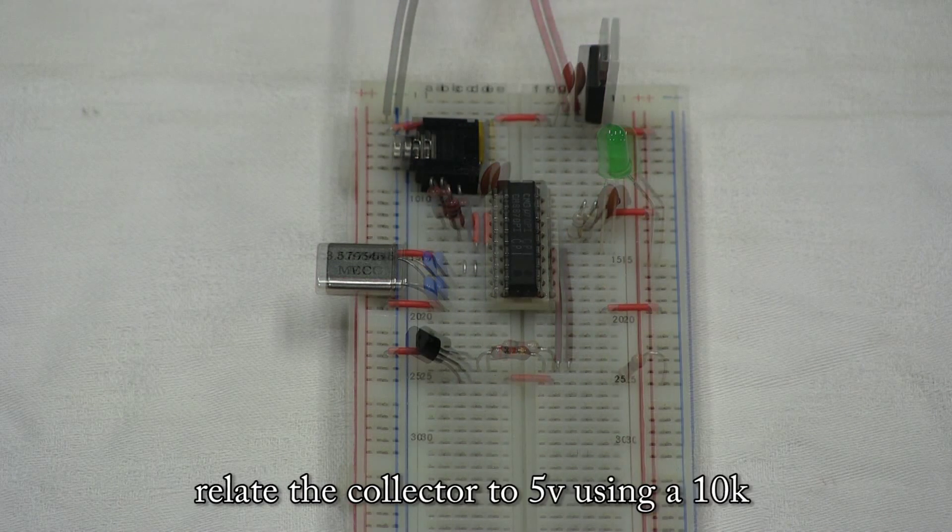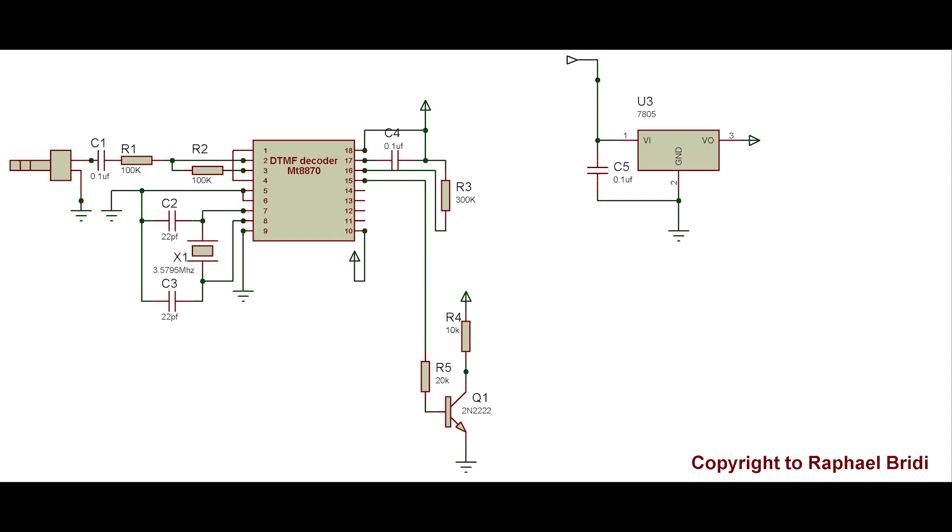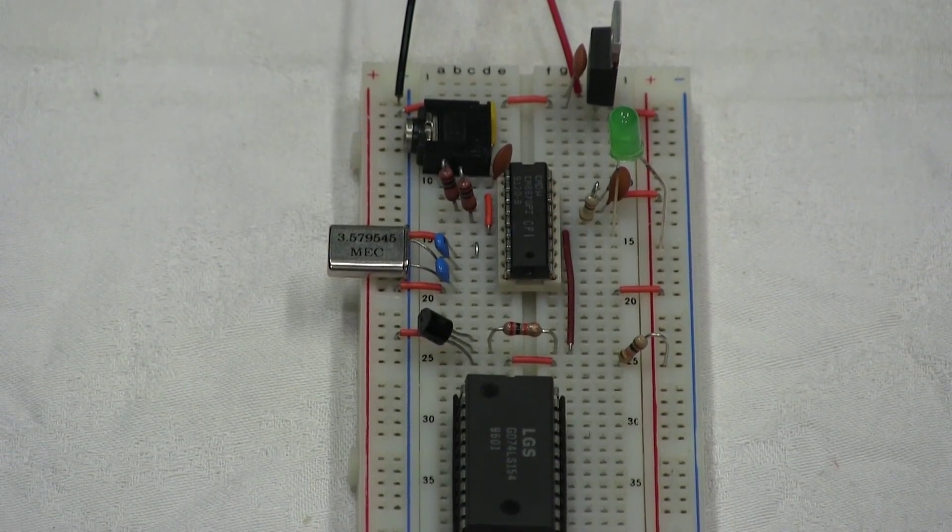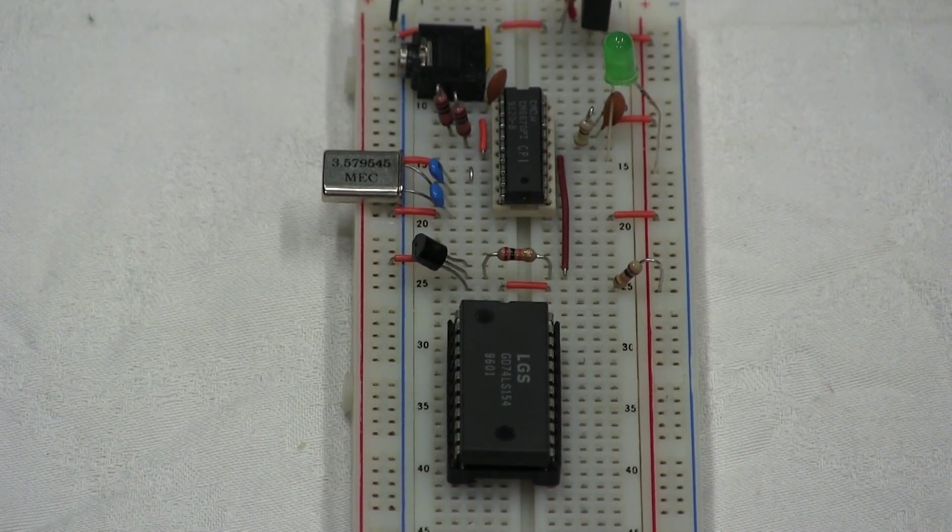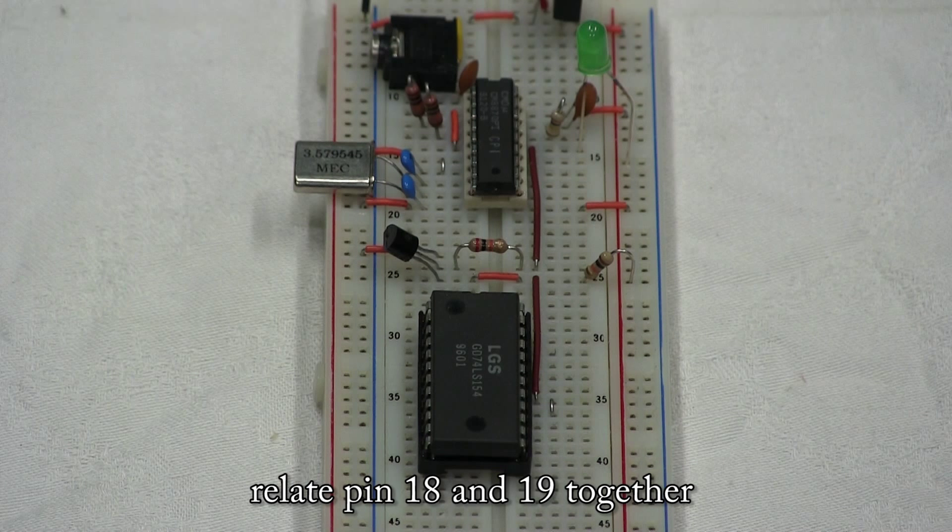Ground the emitter. Relate the collector to 5V using a 10k. Wire the collector to pin 19 of the demultiplexer. Relate pin 18 and 19 together.